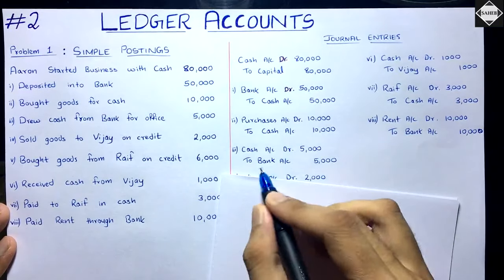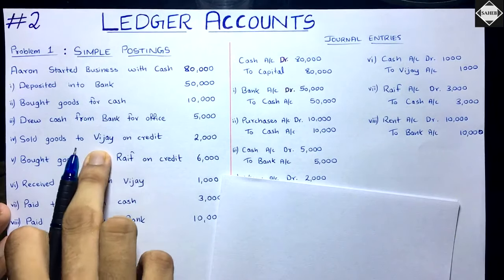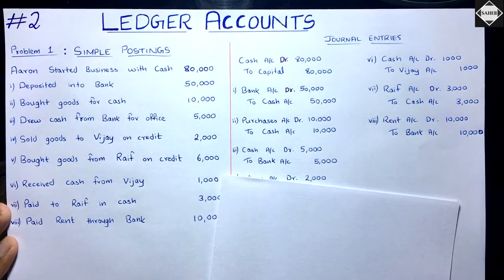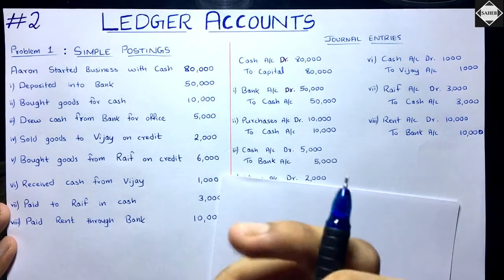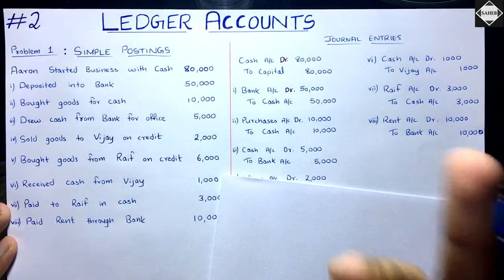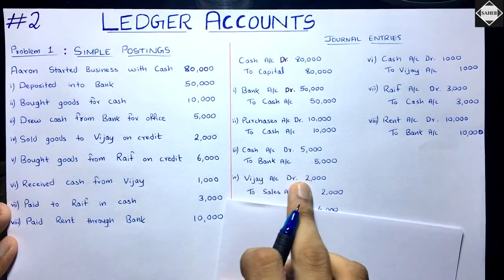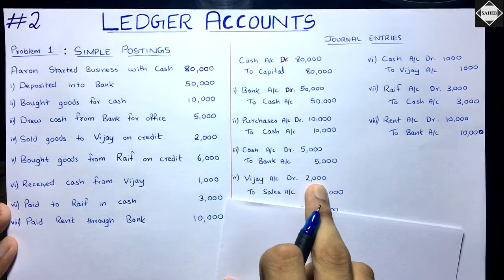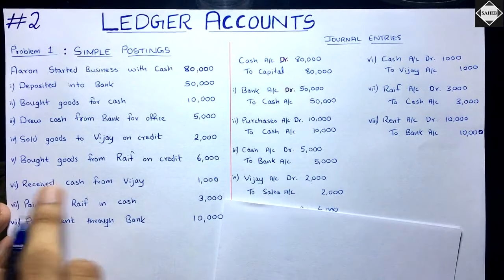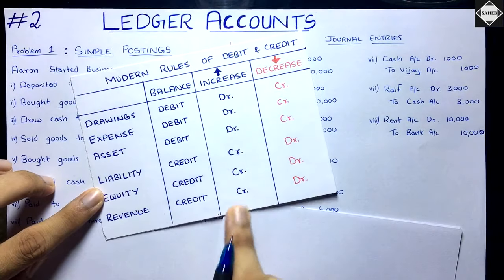Next: sold goods to VJ on credit 2,000. VJ hasn't paid anything, so VJ is your debtor — your receivable, your asset. VJ is increasing as a debtor because you're going to receive money from him in future. So the entry is: VJ Account debit 2,000, to Sales Account 2,000. Sales is revenue, and when revenue increases you credit it.